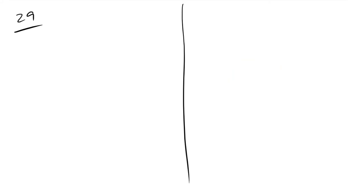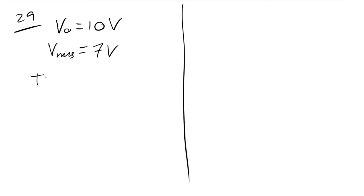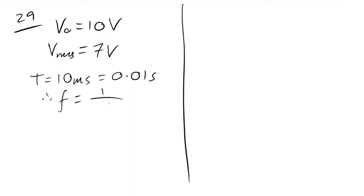Question 29: a CRO trace. Y-sensitivity is 10 V/div, so peak voltage is 10 V, meaning V_RMS = 10/√2 ≈ 7 V. The time base is 5 ms/div; the wave spans 2 divisions, so time period = 10 ms = 0.01 s. Frequency = 1/0.01 = 100 Hz. The answer is D.